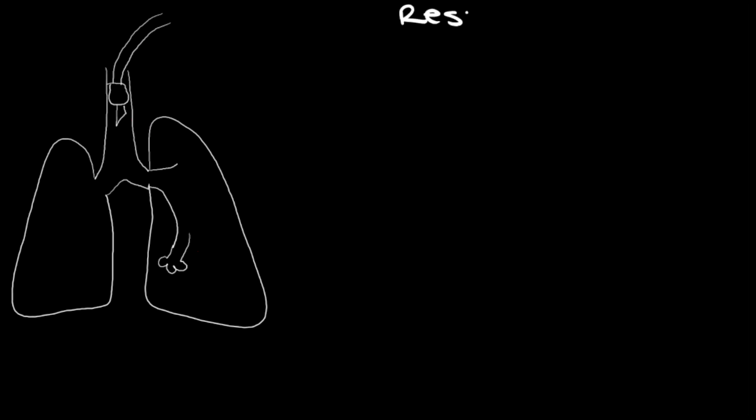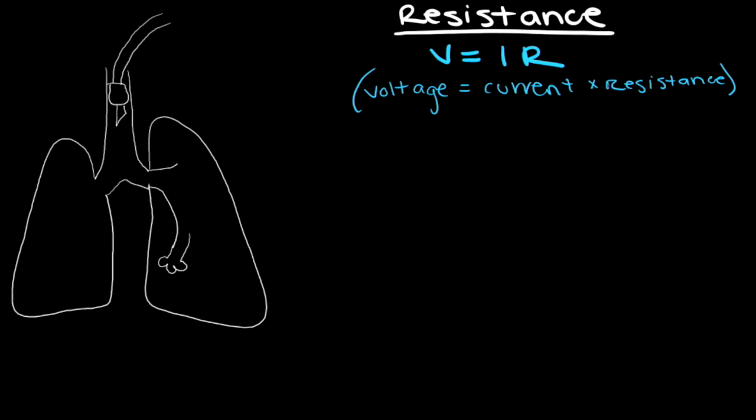So let's start with resistance. This might seem a little bit abstract, but if you get the hang of this now, it will make troubleshooting the vent much easier. Your patient Sarah will thank you for taking the time to learn this. The equation that we use for resistance comes from the basic physics equation Ohm's law. The analogous equation when talking about mechanical ventilation is: change in pressure equals flow times resistance.